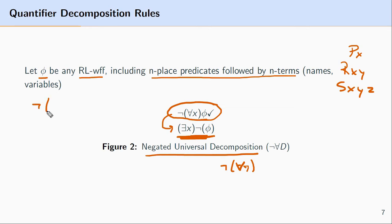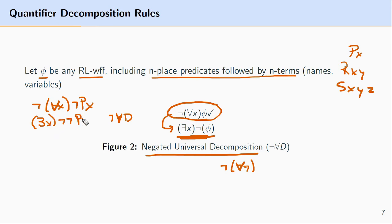To give you one example, let's say we had ¬∀x¬Px. Applying negated universal decomposition to this formula would give us ∃x¬¬Px. All we're doing is replacing the negated universal quantifier with an existential quantifier, leaving ¬Px alone, and the existential quantifier now ranges over the negation of ¬Px.